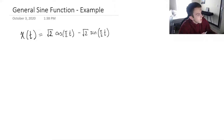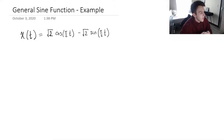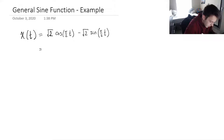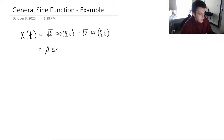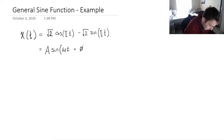Hey everyone, I wanted to do a video explaining the process of how to go through a general sine function, and I think the best way to do this is just with an example. We're given a function and the goal is to turn it into a form where we have some amplitude and can represent cosine and sine from our first function as a single sine function with some frequency and a phase shift.